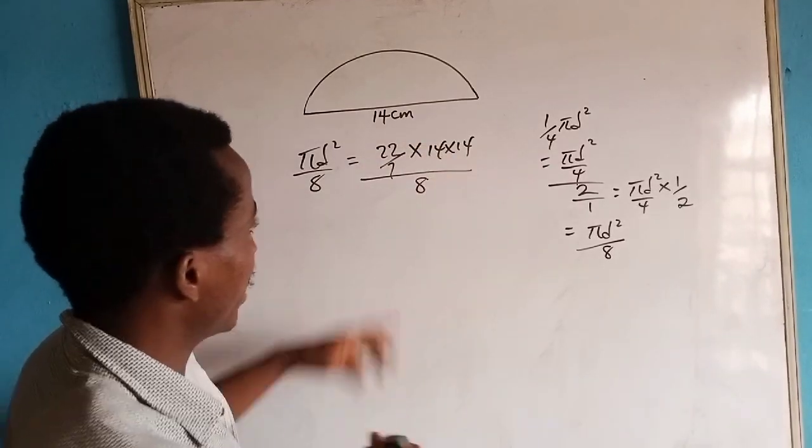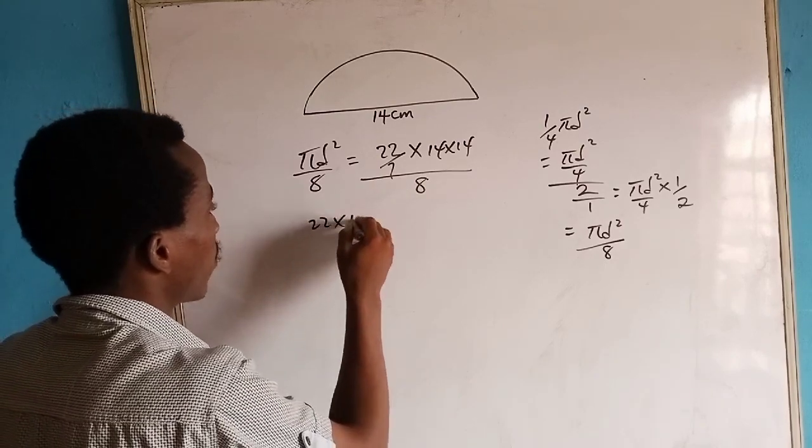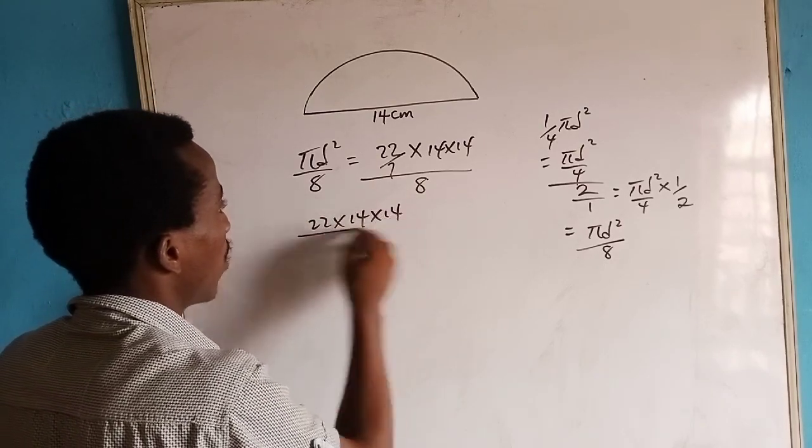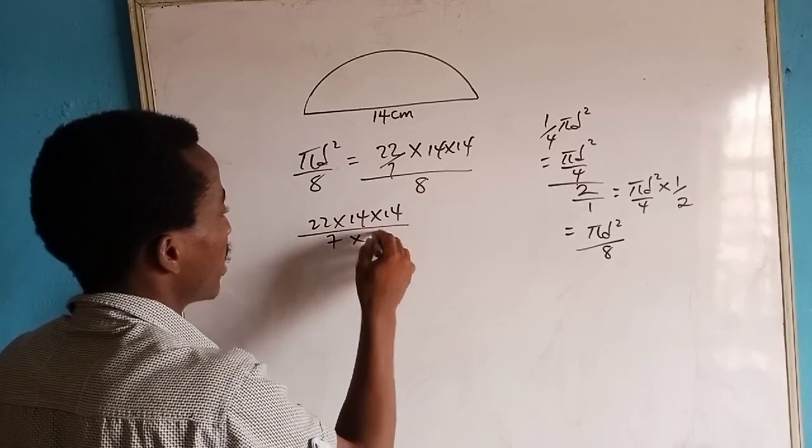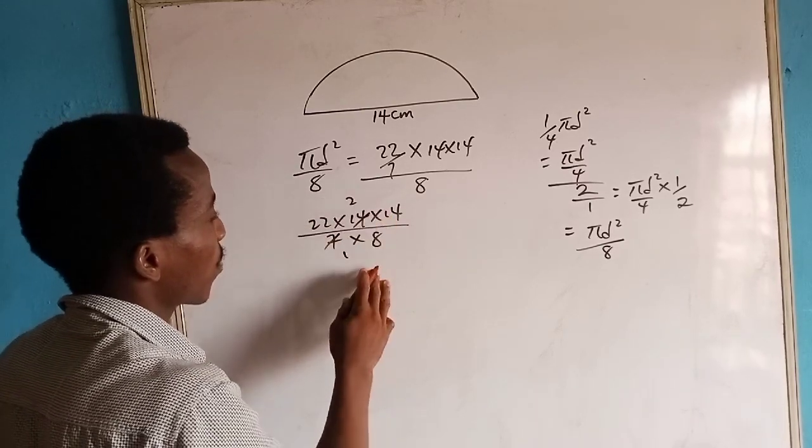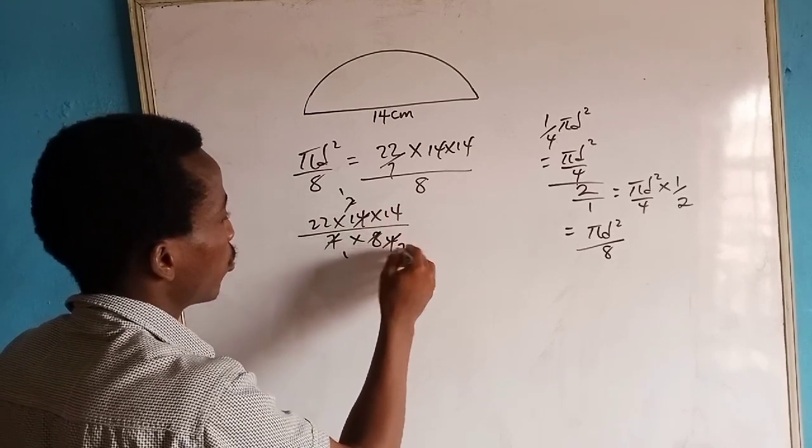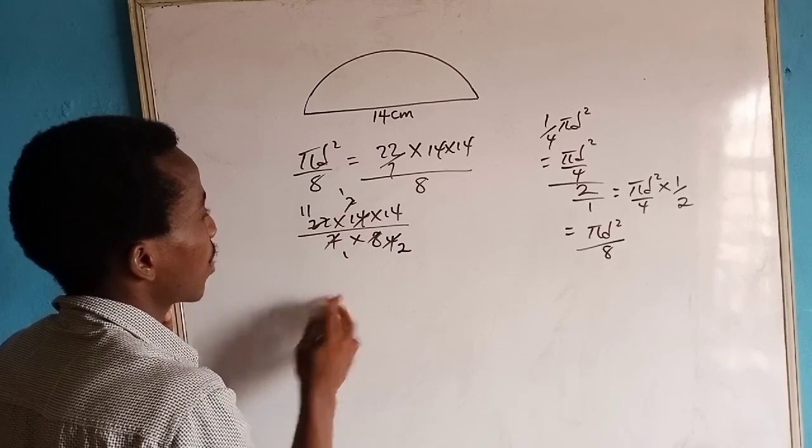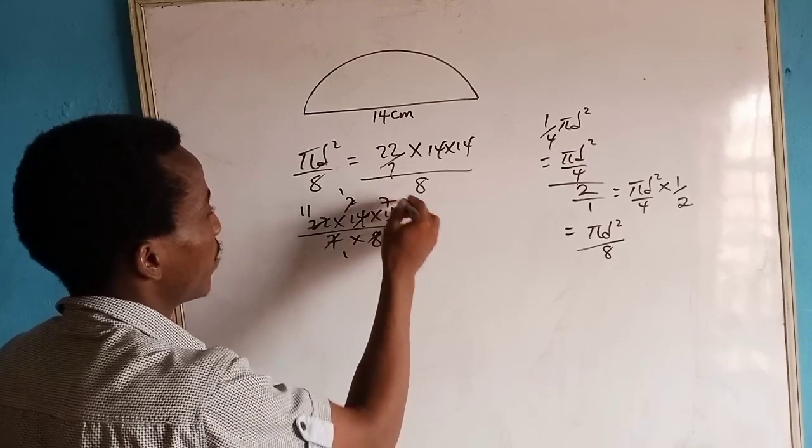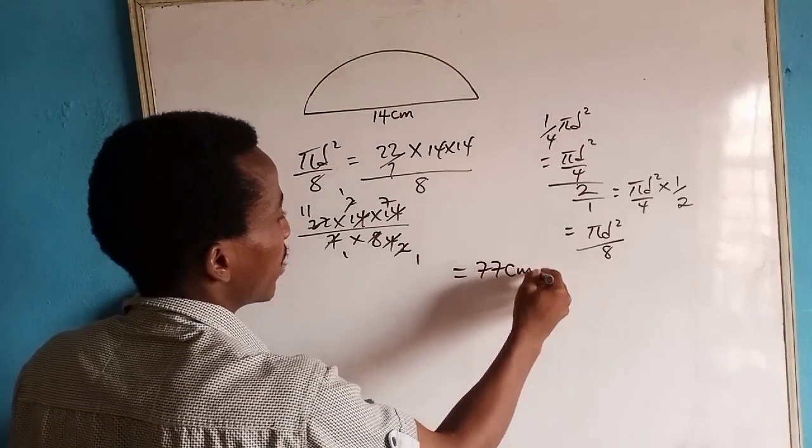I can write this as 22 times 14 times 14, all over 7 times 8. 7 in 14 is 2, 2 here 1, 2 here 4, 2 here 2, 2 here 11, 2 here 1, 2 here 7, 7 times 11 gives us 77 centimetre square.